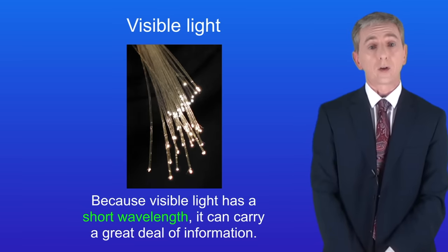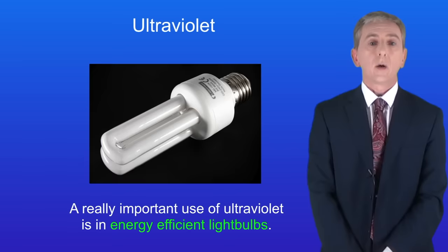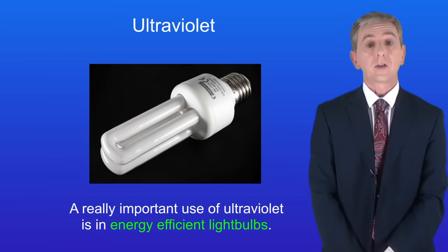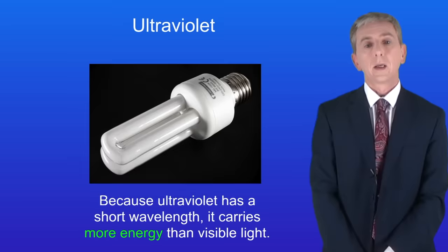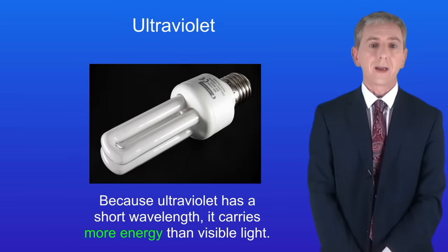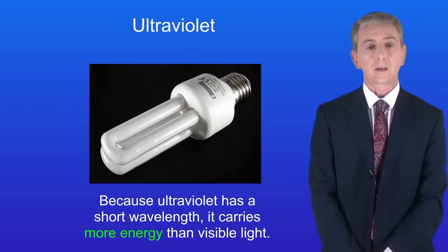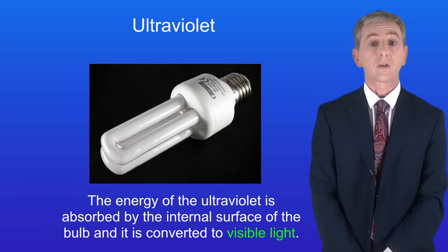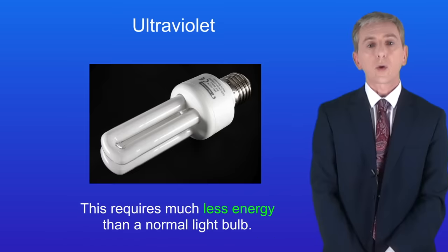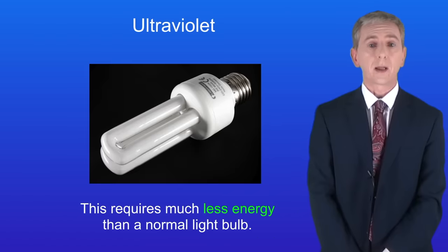Okay the next electromagnetic wave is ultraviolet. Now a really important use of ultraviolet is in energy efficient light bulbs such as this one. Ultraviolet light is created inside the bulb. Now because ultraviolet has a short wavelength it carries more energy than visible light. The energy of the ultraviolet is absorbed by the internal surface of the bulb and it's converted to visible light. This requires much less energy than a normal light bulb.